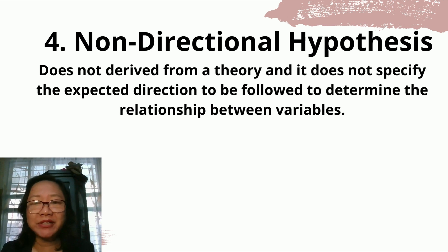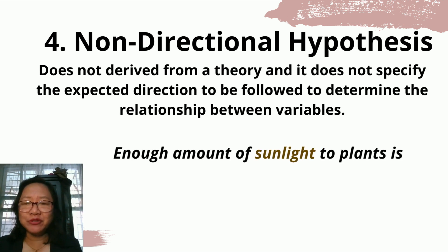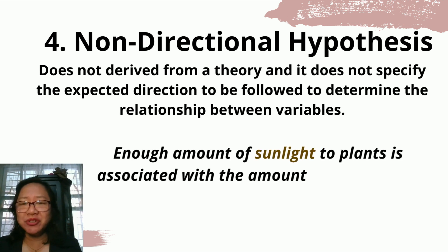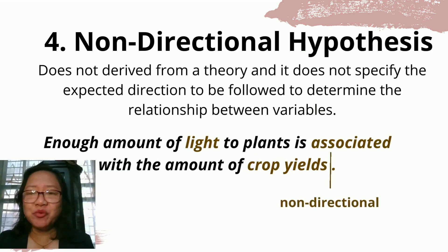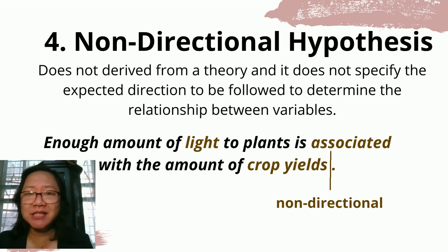The fourth type is non-directional hypothesis. It does not derive from theory and does not specify the expected direction of the relationship between variables. Example: enough amount of sunlight to plants is associated with the amount of crop yields. The word 'associated' makes it non-directional because it does not identify whether crop yields will increase or decrease.